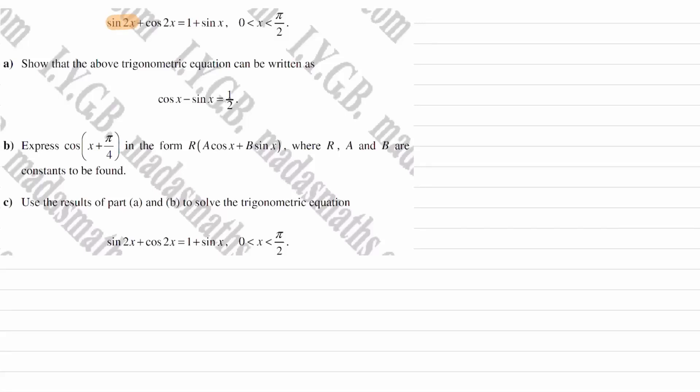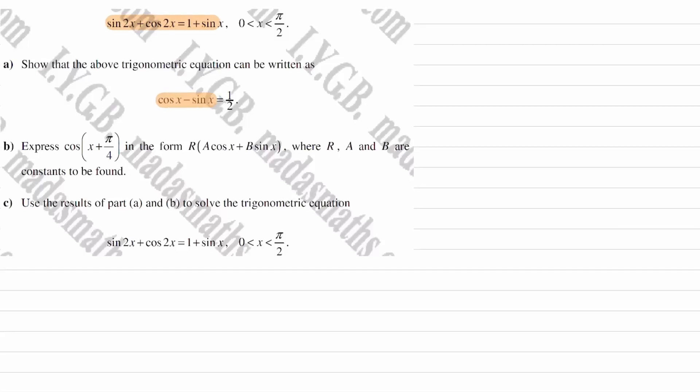For part A, we're trying to show that this equation can be rewritten as this. So we're going to be using the double angle formulas. We're going to be using sin 2x equals 2 sin x cos x. We have no option for that one. That's the only way we can break down that sin 2x.